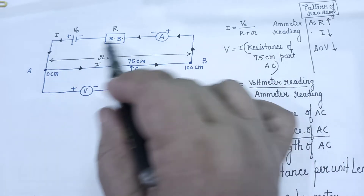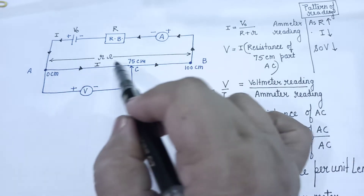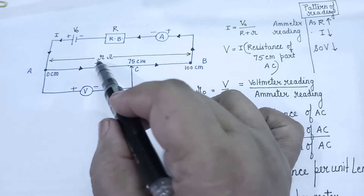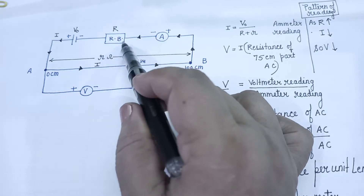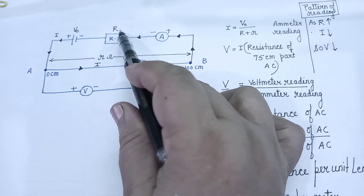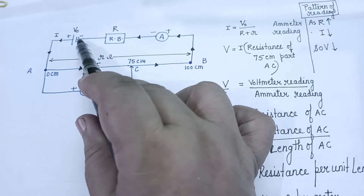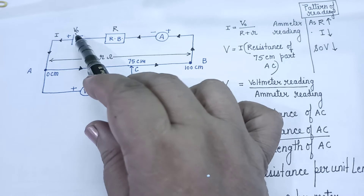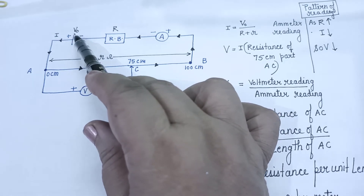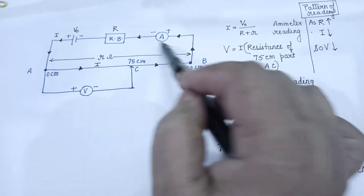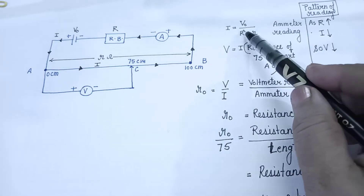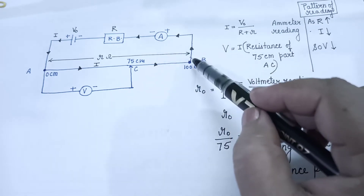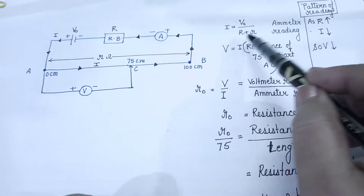In this wire, in this loop, the resistance of AB wire — because AB wire is a constantan or manganin resistance wire. Let this resistance be symbolized as small r, and the resistance of the resistance box be represented with capital R. Then if V0 is the voltage applied with the battery, the current through this loop will be the potential difference at the terminal of the battery divided by the total resistance of the circuit: V0 upon (R + r). We take the resistance of the contact wire to be negligible in comparison to these two resistances.